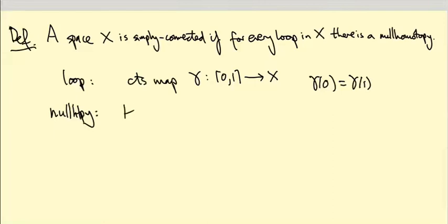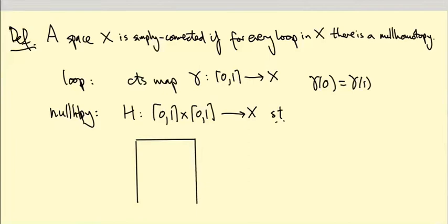It's a map H from [0,1] times [0,1] into X. Such that... So let me draw [0,1] times [0,1]. It's a space with two parameters, it's a square, right? So it's side length one in both directions.